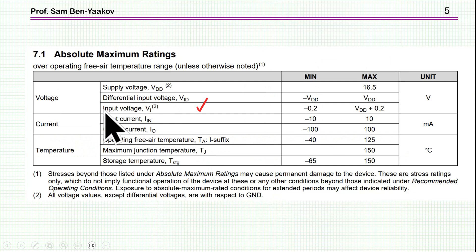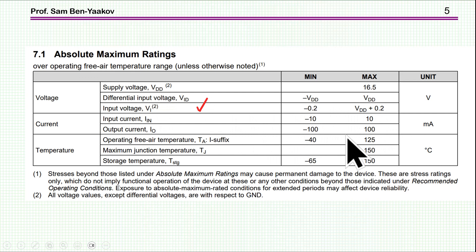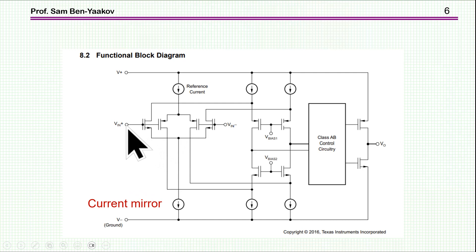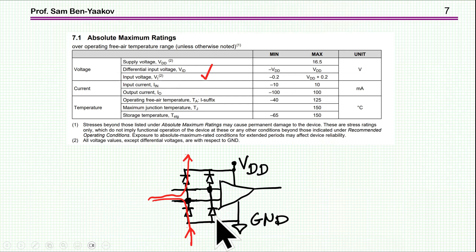The next parameter is the input voltage. For this particular device the input voltage range is from minus 0.2 volt to VDD plus 0.2 volt. Here is a functional block diagram of this particular amplifier. We can see this is a MOS type operational amplifier — the transistors are MOSFETs. The 0.2-volt limitation comes from the fact that in most operational amplifiers and analog devices, there is a protection diode at the input.